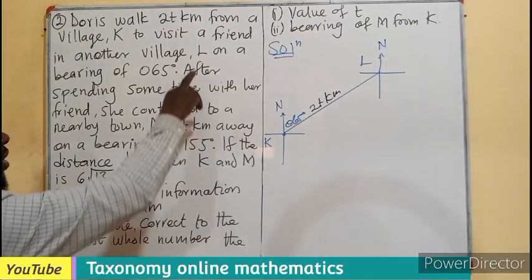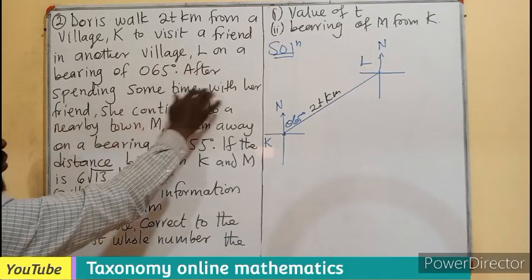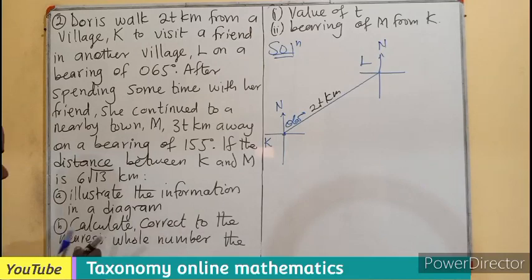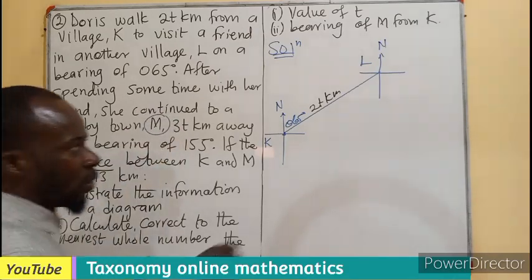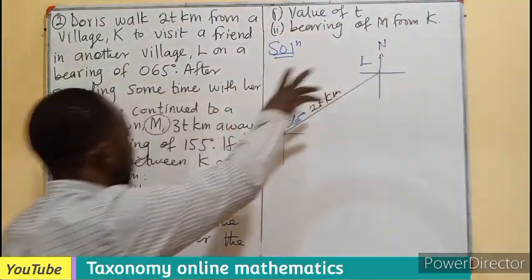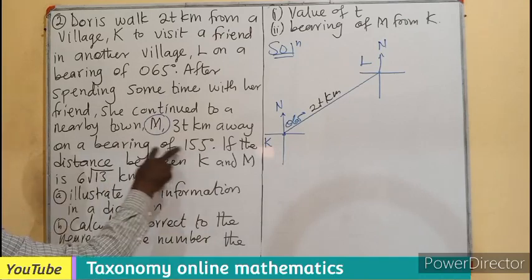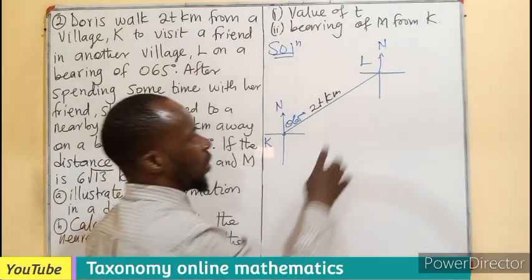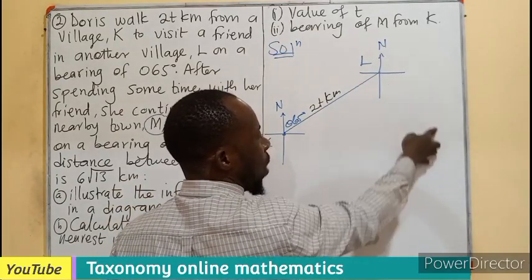So it says you move on there and stay. So after spending some time with a friend, she continued to a nearby village which is also labeled M. So it means we are going to move from here again to another village on a distance of 30 kilometers. Then the bearing is 155. So we are going to go to the north of L and we move it until we get 155.